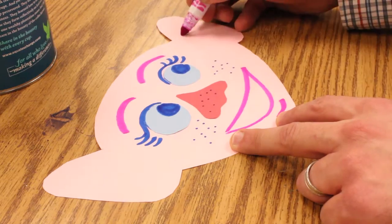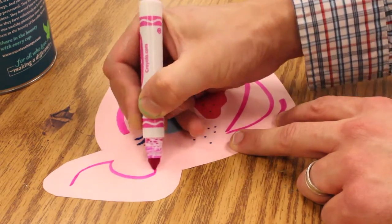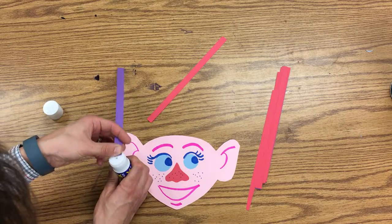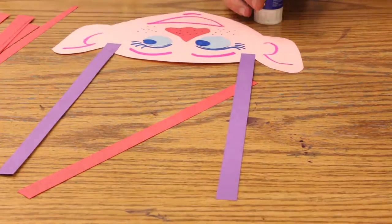And then for the ears, I just add this little backward C. This is a C here. And we'll start by putting glue on for the hair.